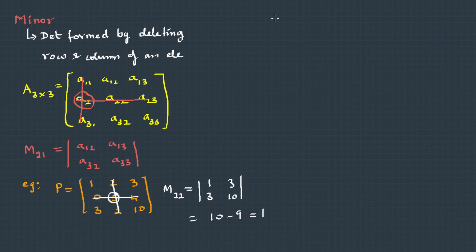Cofactor is basically assigning a sign to the minor. Now the question is what will be the sign, whether it's plus or minus. This is defined by: cofactor for a specific position, maybe some ij, is (-1)^(i+j) into the minor of ij.